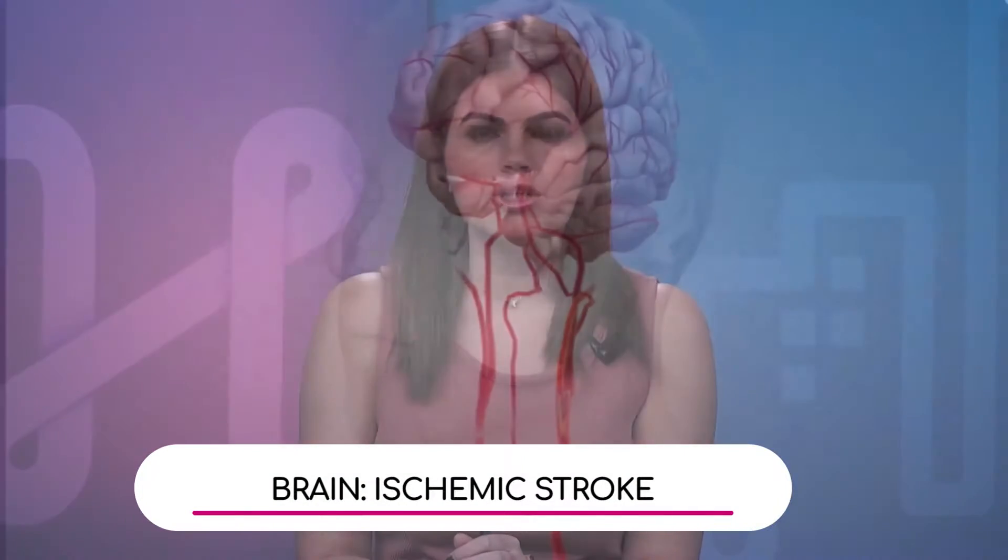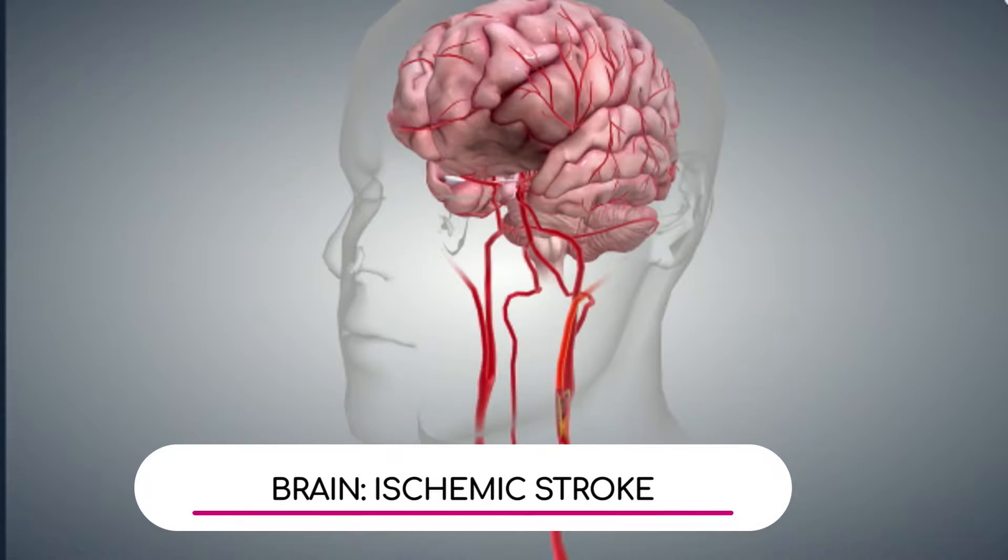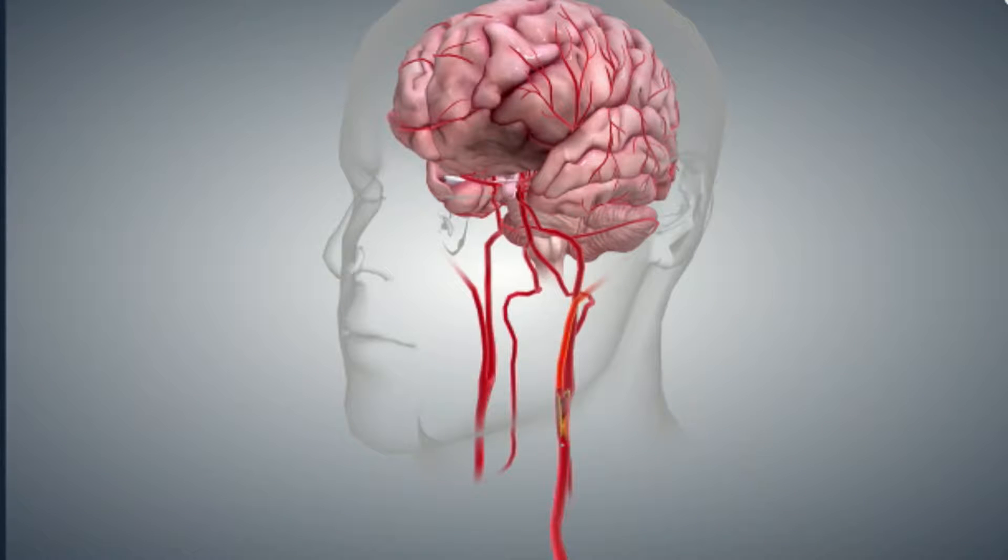Ischemic strokes are more common. Let's take a look at our 3D image. We have a brain that shows signs of an ischemic stroke. Dr. De Los Rios, can you explain what we're looking at here exactly and where we're seeing that rupture or blocked vessel?